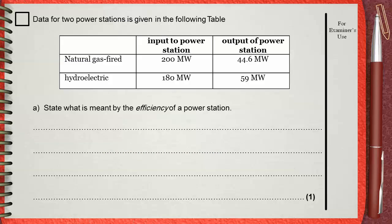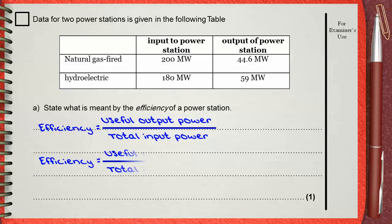We can say that efficiency equals useful output power divided by the total input power. You can also use the word energy instead of power. Efficiency is a fraction—it has no units because it's just a ratio. You can multiply it by 100 so it can be a percentage.